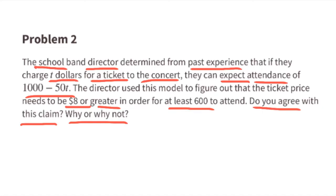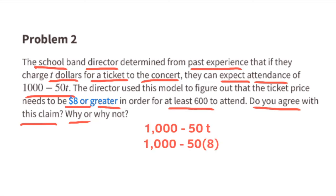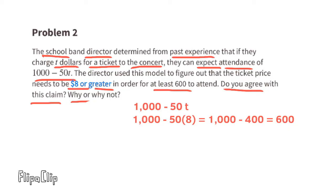Do you agree with this claim? The band director is using the model 1000 minus 50t, where t is the price of the ticket. We can test this by substituting t with eight dollars: 1000 minus 50 times 8 equals 1000 minus 400, which equals 600. So far it checks out.